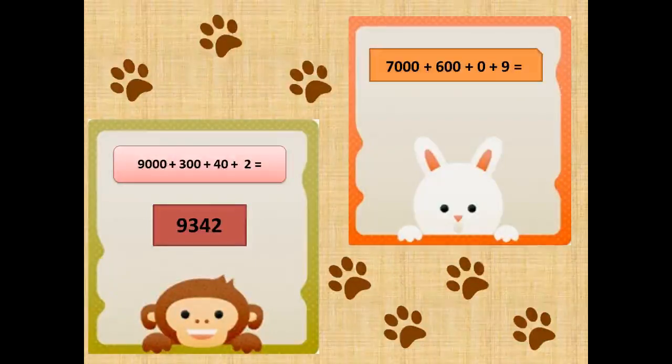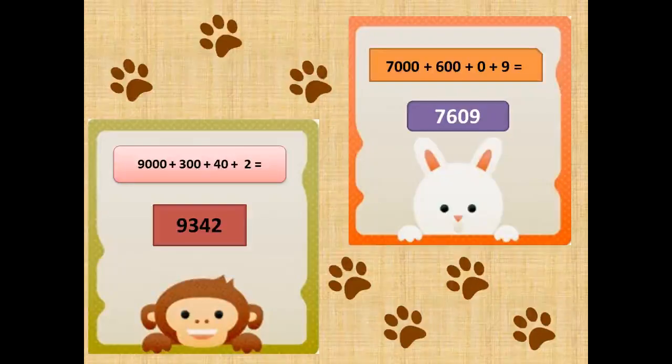And the last one to go, 7,000 plus 600 plus 0 plus 9. It gives the number 7,609.